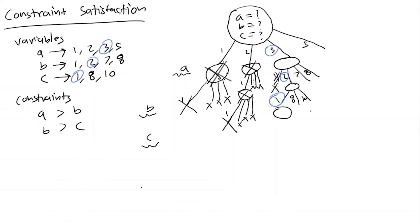Our goal was to pick values for all variables such that all constraints were satisfied — none were broken. We did this by systematically picking values first for our first variable, and then for subsequent variables picking values that don't violate constraints based on the previously picked variables.